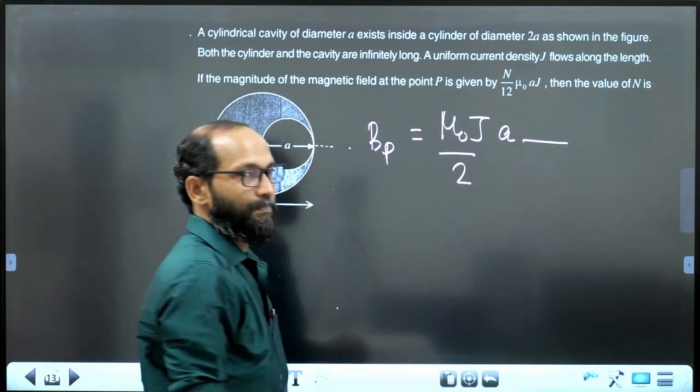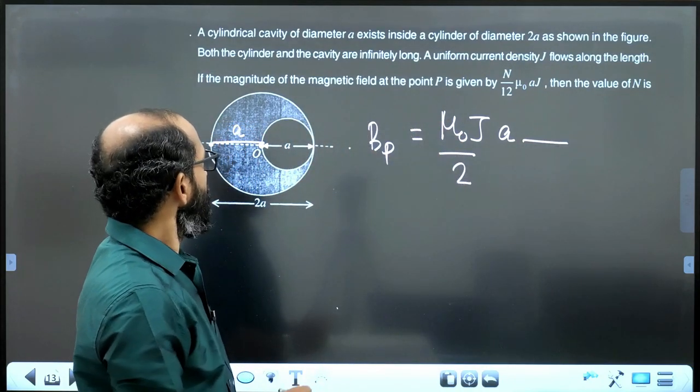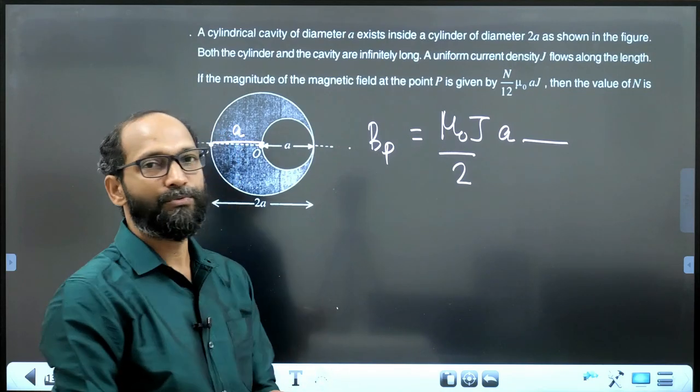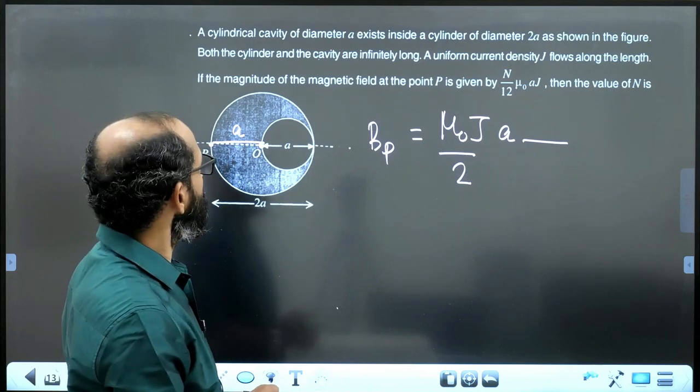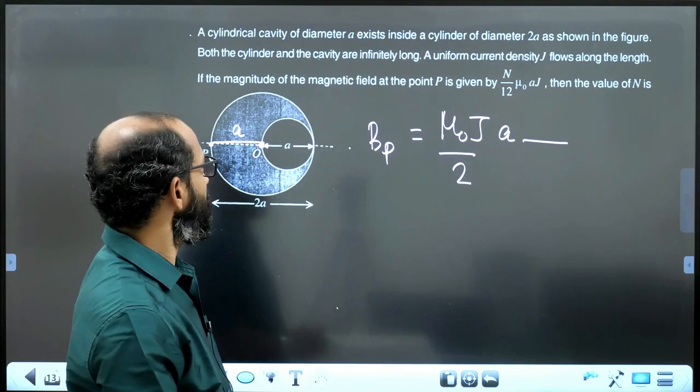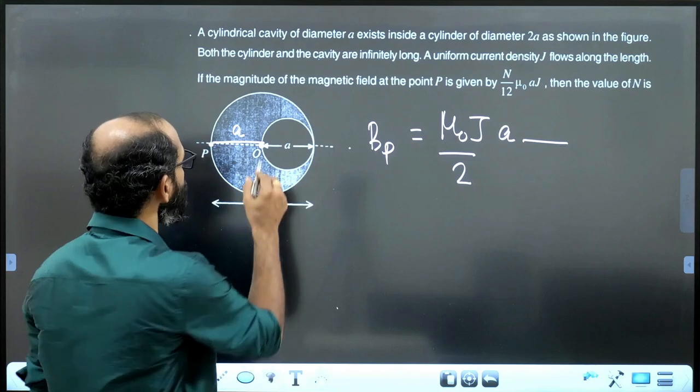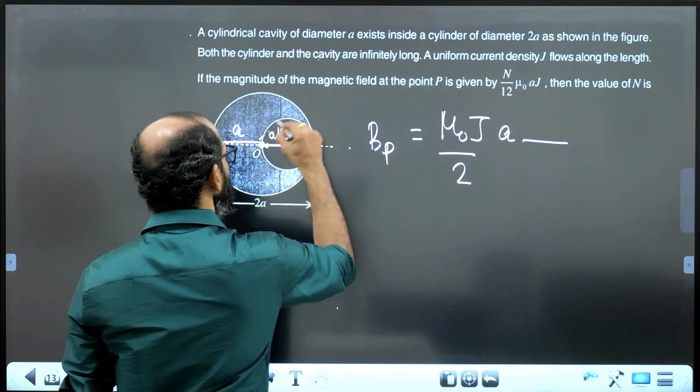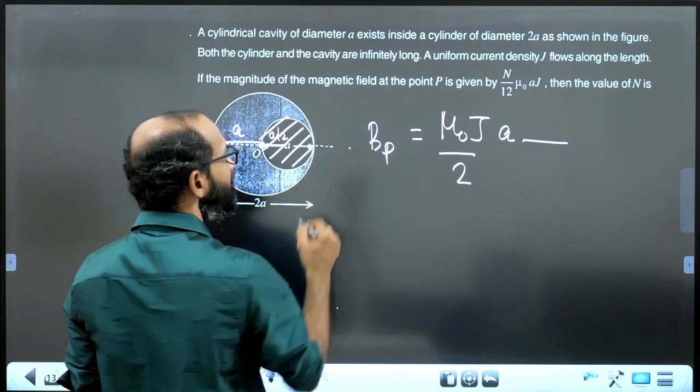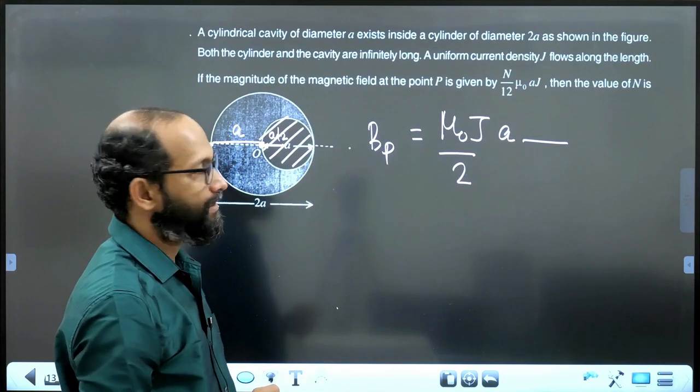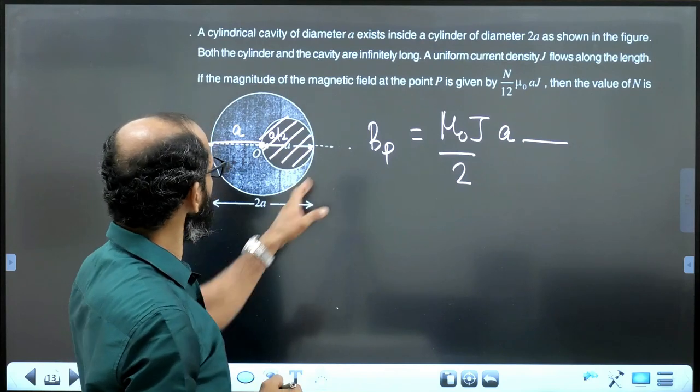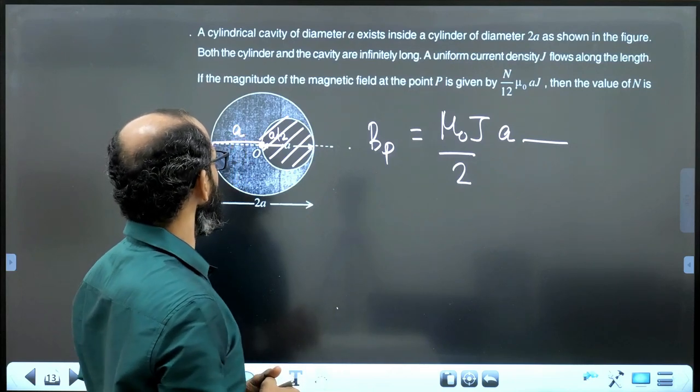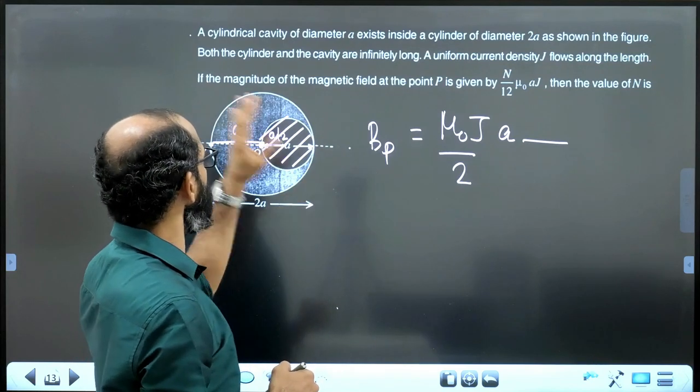We have to remove the field contribution due to the removed cylinder. Removed cylinder has a radius A by 2 but its diameter is 2A. We know this distance is A by 2. And that also carries same current density but different current. Before, the total current is flown through an area of pi A square, circular cross-section of area pi A square.